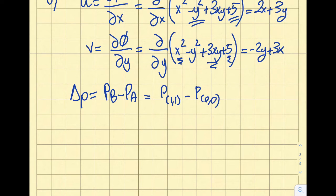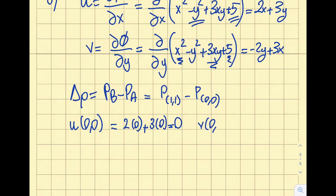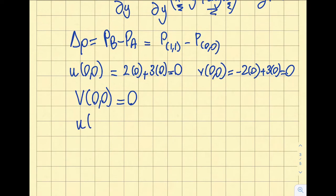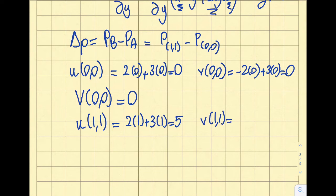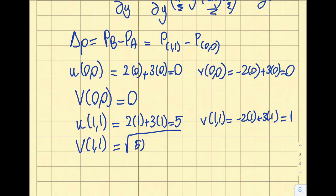At point (0,0): u(0,0) = 2(0) + 3(0) = 0, and v(0,0) = −2(0) + 3(0) = 0, so the velocity magnitude is 0. At point (1,1): u(1,1) = 2(1) + 3(1) = 5, and v(1,1) = −2(1) + 3(1) = 1. The speed at B is √(5² + 1²) = √26, but since Bernoulli's equation uses V², we won't need to compute the square root.